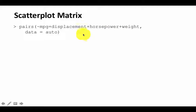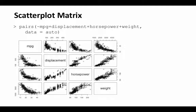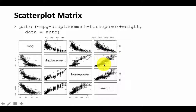Then you say data equals auto, because auto is the name of our data set. If you do that, you will get a scatter plot matrix, which is actually showing many scatter plots at the same time. So once again, this is following two of Tufte's principles: one is show many variables, and the second is show comparisons.